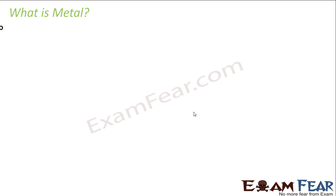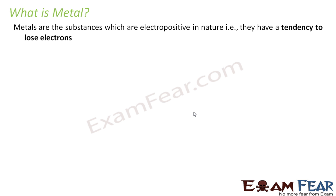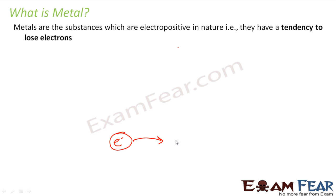The first question that comes to our mind is: what is a metal? Metals are substances which are electropositive in nature — that means they have a tendency to lose electrons. They have extra electrons and they want to lose them. Generally, in the valence shell they have one extra electron. We will explain atomic structure in the next couple of chapters.